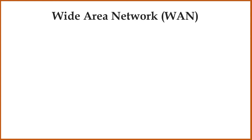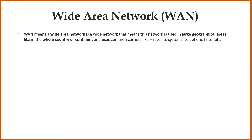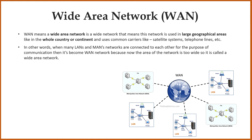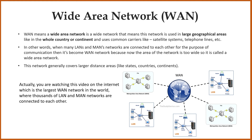Now let's discuss the wide area network. WAN means wide area network, which is a wide network. This network is used in larger geographical areas, like the whole country or the continent, and uses common carriers like satellite systems, telephone lines, etc. In other words, when many LANs and MANs are connected to each other for the purpose of communication, then it becomes one network, because now the area of the network is too wide. This network generally covers larger distance areas like states, countries, and continents. The internet is the best example of a WAN network. You are watching this video on the internet, which is the largest WAN network in the world, where thousands of LAN and MAN networks are connected to each other.